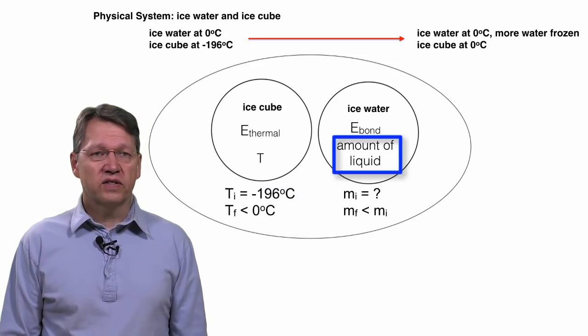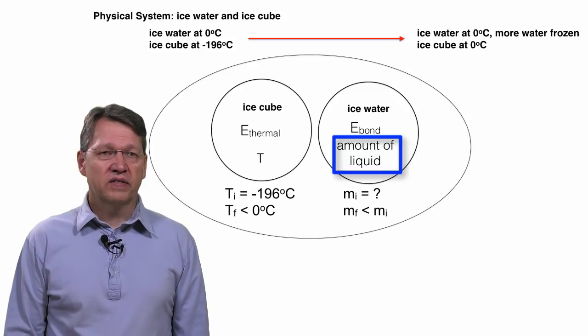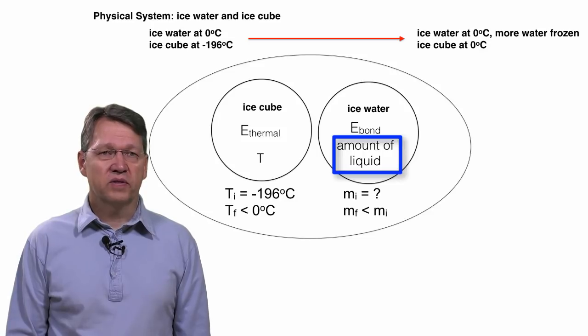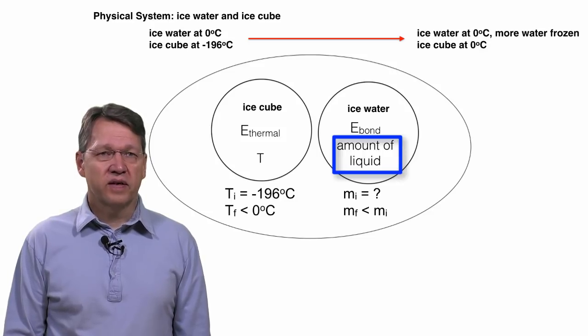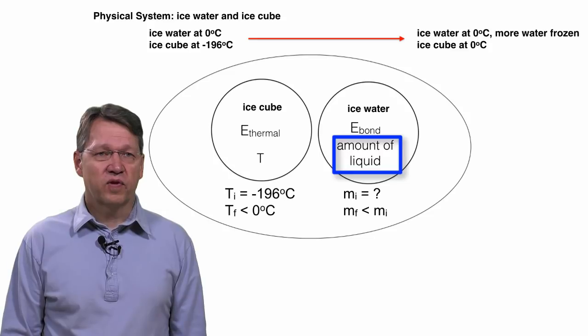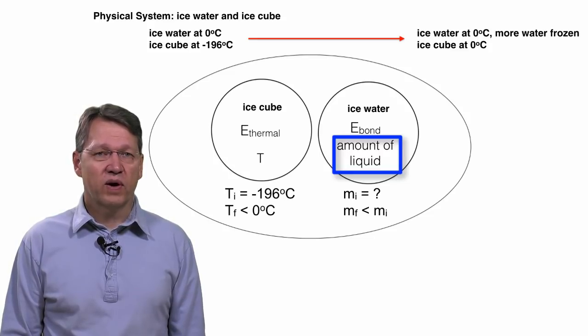The indicator for bond energy is the amount of mass of the liquid water. We could also use the mass of the ice as the indicator, but then the indicator and the bond energy would go in opposite directions. That is, as the amount of water goes down, the amount of ice goes up while the bond energy goes down. It seems a little less confusing to choose the higher temperature phase as the indicator so that the indicator and the bond energy move in the same direction.